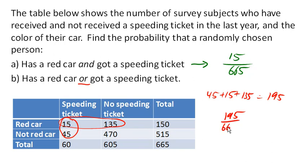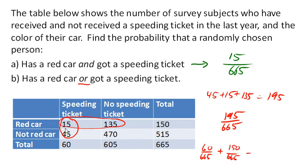We could have also done this the longer formulaic way: take the probability that they got a speeding ticket — that's 60 out of 665 — and add to that the probability that they have a red car, which is 150 out of 665, and then subtract the duplicates — those that have both. If we do this, we'll get exactly the same answer. But when we have a small table like this, it's probably just as easy to just count up the possibilities.